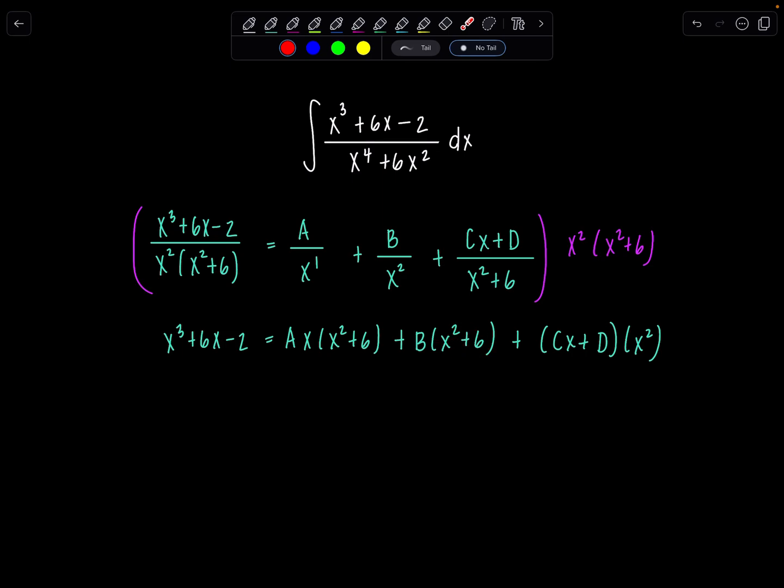So in this case, usually it's just better to expand everything, multiply everything out, and then we're going to equate the coefficients of like terms. So I'm just going to distribute everything on the right-hand side. We're going to have a little distribution multiplication party. A x cubed plus 6 a x plus b x squared plus 6 b plus c x cubed plus d x squared.